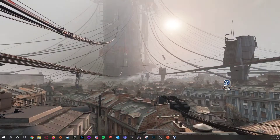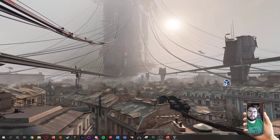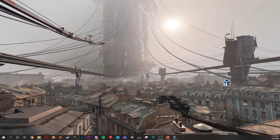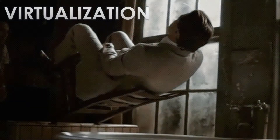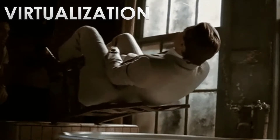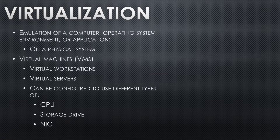So let's talk about virtualization. Virtualization means pretty much just what it says — it's emulation, pretending to be a computer, simulating an operating system. It allows you to run multiple operating systems on one computer. You can create a virtual workstation that someone actually works at, or a virtual server that provides services over the network to other things.